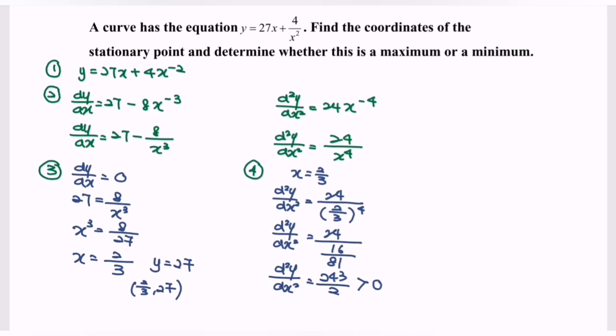So meaning that if it is greater than 0, minimum value. And we can say that 2 over 3, 27 is a minimum point.